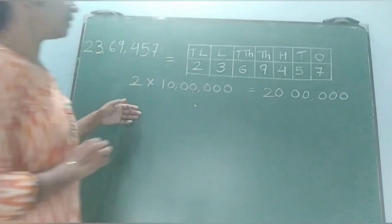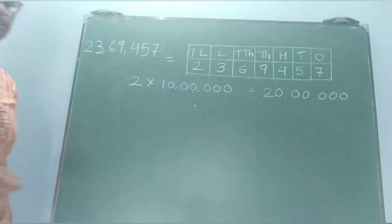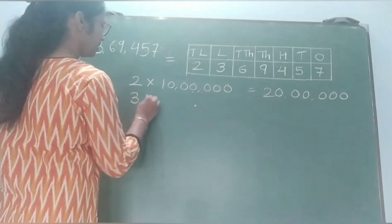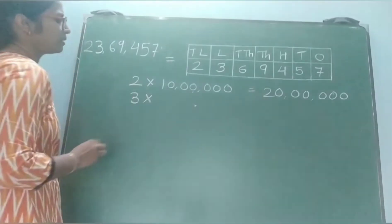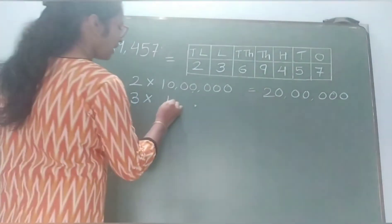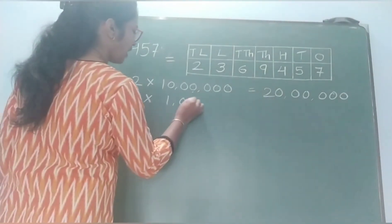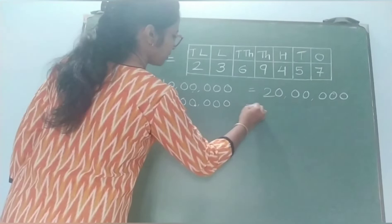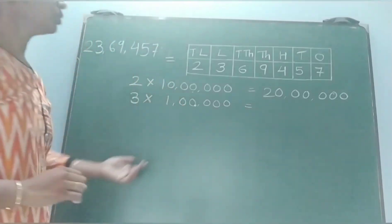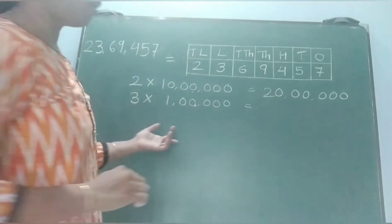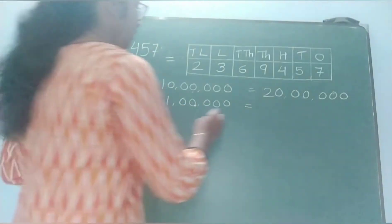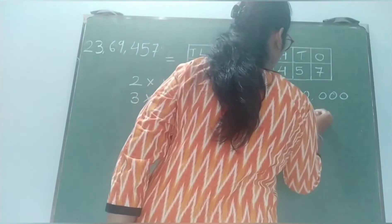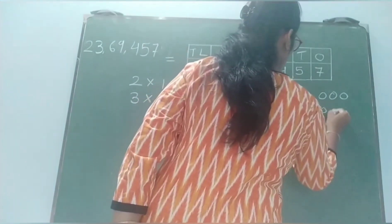Now see the next number. 3 is in the lakhs place, so 3 gets multiplied by 1 lakh. So the value of 3 is 3 lakhs.